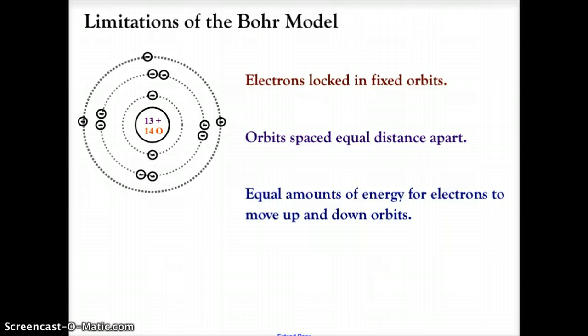It also claims that the orbits are spaced equal distance apart and actually the orbits or clouds that we're going to talk about in the quantum model actually overlap and there are spaces where the electrons are traveling through. The Bohr model talks about equal amounts of energy to move electrons up and down orbits and that also is not necessarily the case as we will see in the quantum model.